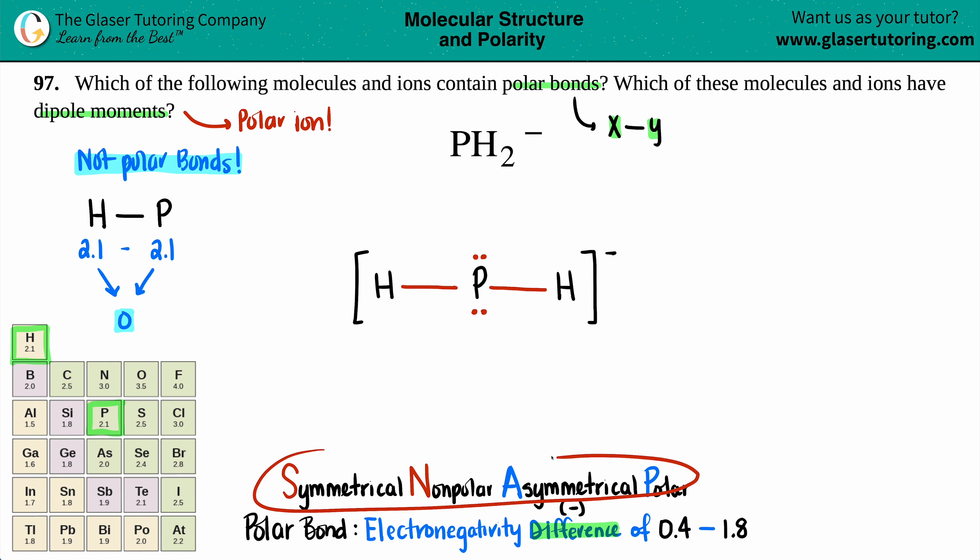Now, this is where the acronym SNAP comes in. S-N-A-P. Since we want to know that we have a polar ion, I'm just going to key in on the ending because polar ions always are asymmetrical. But there's one other piece of the puzzle that I love to add because it's like a cool little trick.